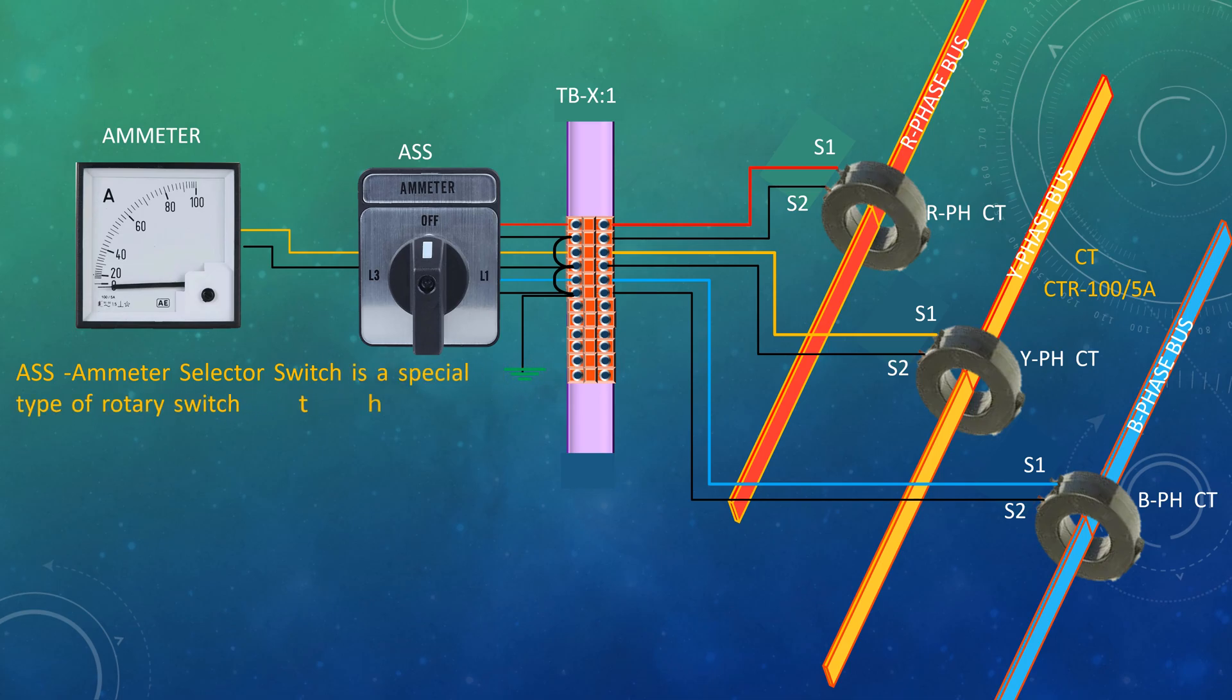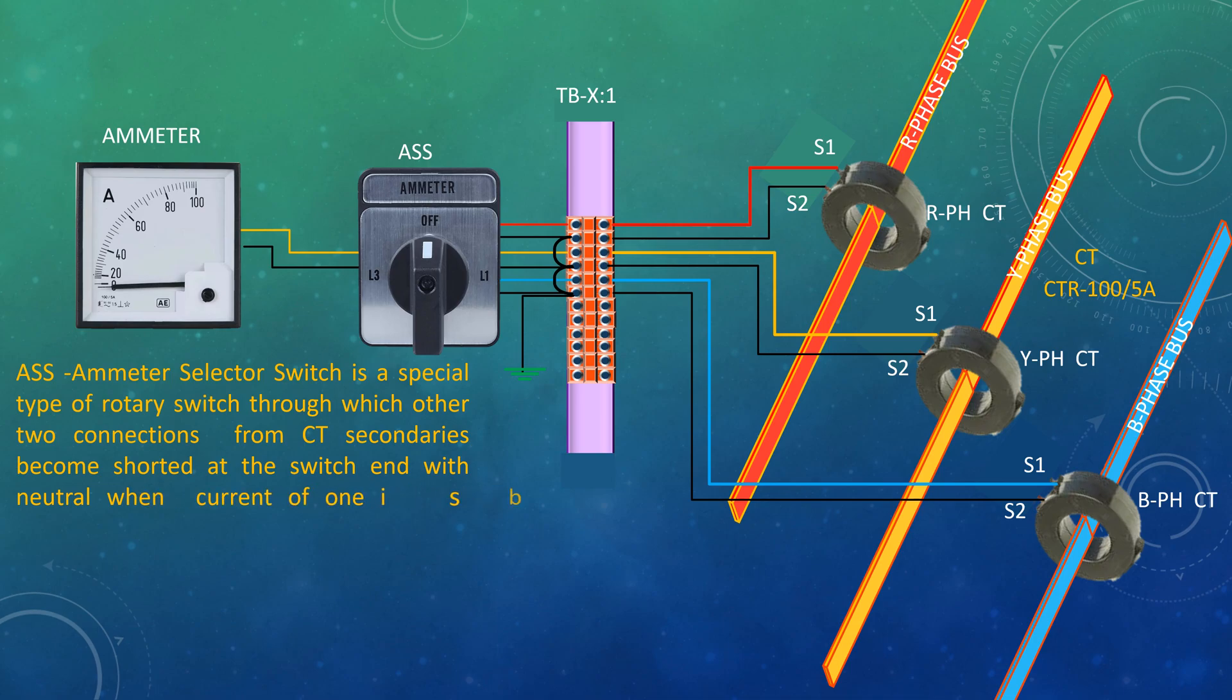Through which other two connections of CT secondaries become shorted at the switch with neutral when current of one line is being measured. This is done by rotation of knob of the selector switch so that secondary of any CT does not become open circuited.